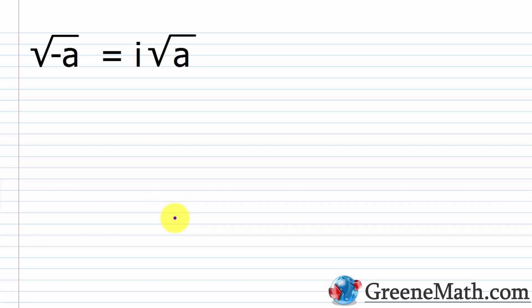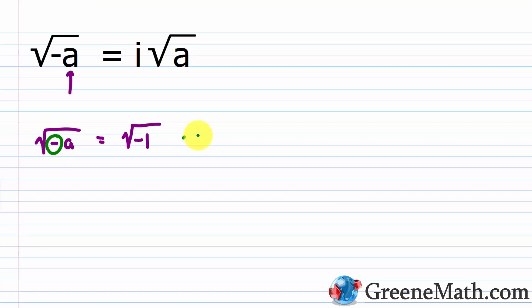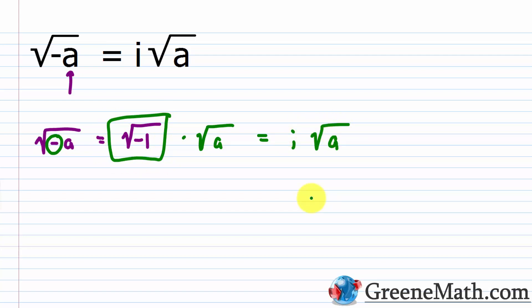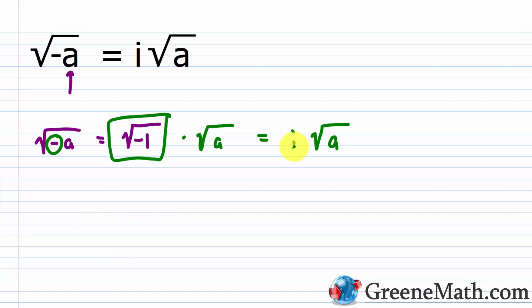In general, the square root of negative a equals i times the square root of a, assuming a is a positive real number. We split the square root of negative a into the square root of negative one — which by definition is i — times the square root of a. You typically see the i written in front of the square root symbol because if you put it after, you might accidentally extend the radical too far. So to clarify, we place i out in front. It is not incorrect to write the square root of a times i, but you will not typically see that.